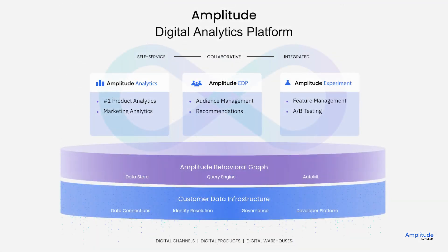Once in the platform, Amplitude's data infrastructure provides data connections, identity resolution, governance, and a developer platform. The data is stored in our database called Behavioral Graph, which powers the rest of our platform.